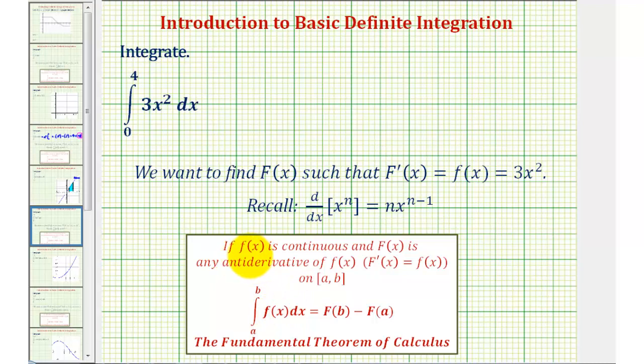where if the integrand function f of x is continuous, and big F of x is any anti-derivative of f of x, meaning the derivative of big F of x is equal to small f of x, then the definite integral here is equal to big F of b